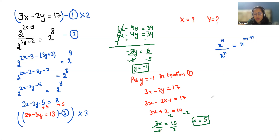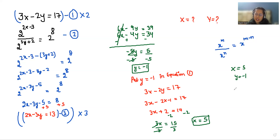So the final value of x is 5 and y is minus 1. I hope it's clear and you find it useful. Please give us a thumbs up and do subscribe to my channel. Stay tuned.